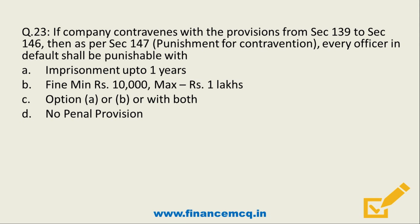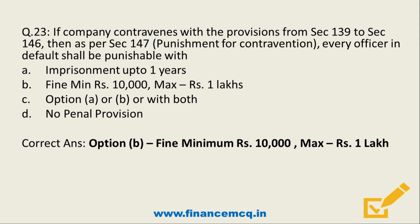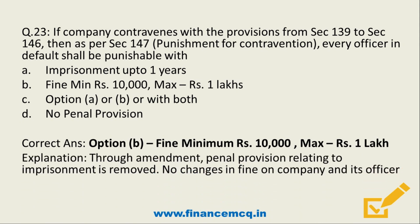Question 23. If a company contravenes the provisions of section 139 to section 146, then as per section 147 punishment for contravention, every officer in default shall be punishable with: option A imprisonment up to 1 year, option B fine minimum 10,000 maximum 1 lakh, option C either imprisonment or fine or both, or option D no penal provision. The answer is option B — minimum fine of 10,000 and maximum Rs. 1 lakh. Through this amendment, the imprisonment provision has been removed and there is no change in the fine on company or its officer.